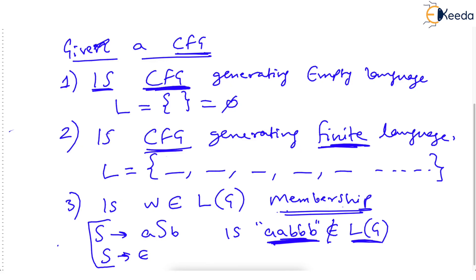So we are asking: is some string an element of the language generated by the CFG? To summarize: the decision properties are — first, will the CFG generate an empty language (is it a senseless CFG)? Second, is the CFG generating a finite or infinite language? And third, is some string an element of the language generated by the CFG? These are called decision properties. We will see how to handle these questions and find the answers — it will be very fun, simple too. See you in the next video, thank you very much.